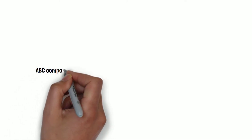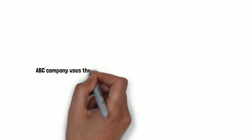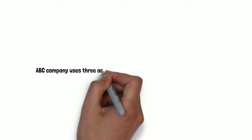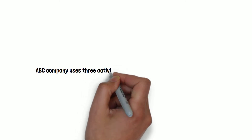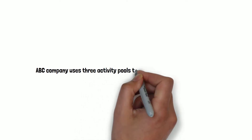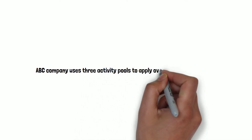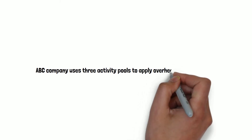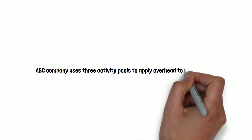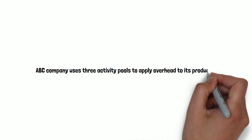Today I'm going to show you how to do the calculation to allocate the overhead cost under ABC costing system. Suppose a company ABC uses three activity pools to apply overhead to its products.